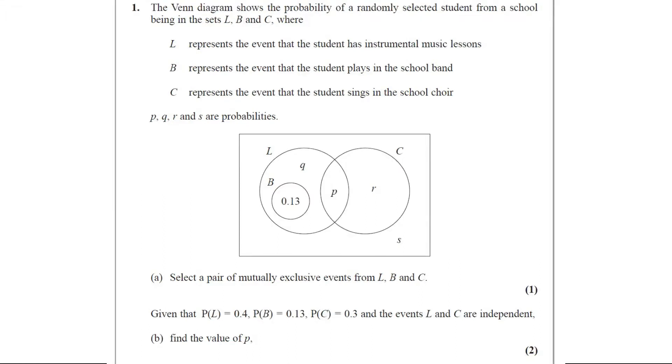L represents the event that the student has instrumental music lessons. B represents the event that the student plays in the school band. C represents the event that the student sings in the school choir. P, Q, R and S are probabilities.